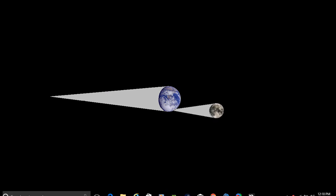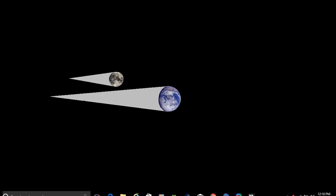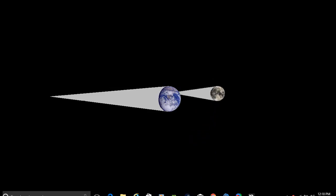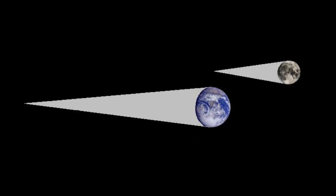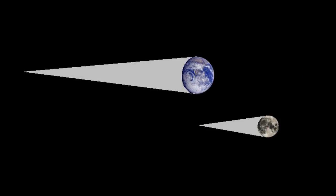Both lunar and solar eclipses result from the Moon's orbit around the Earth. Sometimes it passes through the Earth's shadow, causing a lunar eclipse. Other times the Moon's shadow crosses the Earth, causing a solar eclipse. We don't have eclipses every month because the Moon's orbit is tilted, so most of the time the Moon's shadow passes above the Earth's North or South Pole. However, every once in a while the Moon's orbit brings it through the Earth's shadow or brings the Moon's shadow across the surface of the Earth — these are the times when we have eclipses.